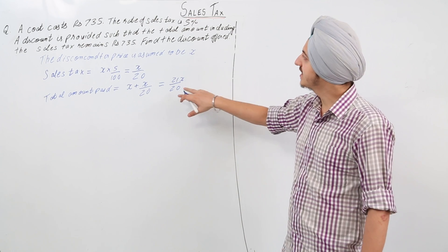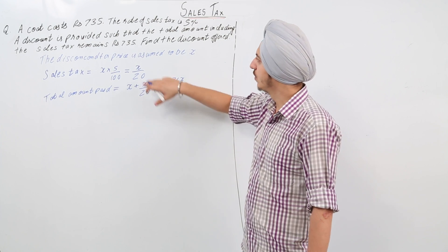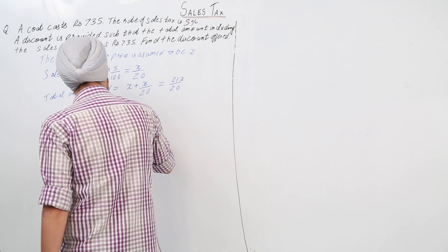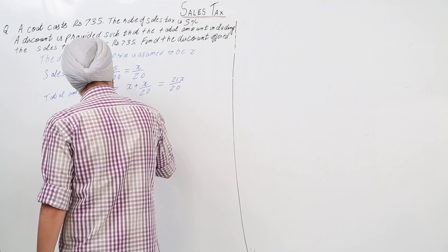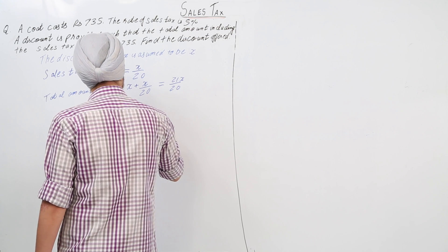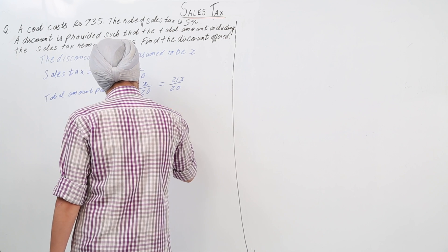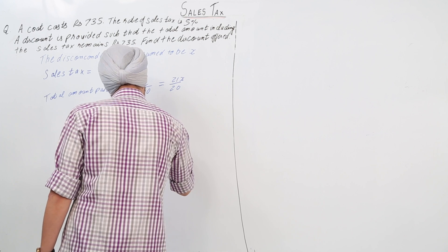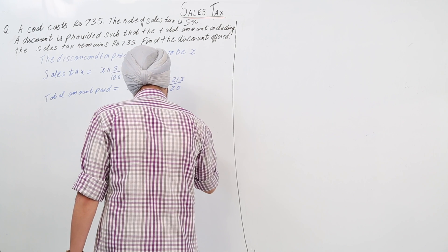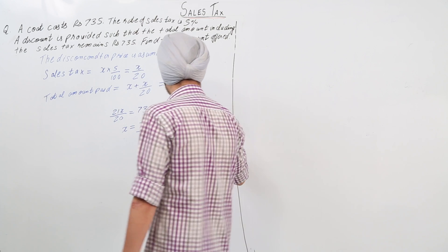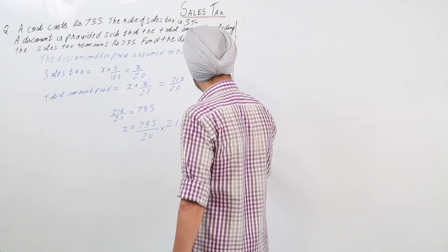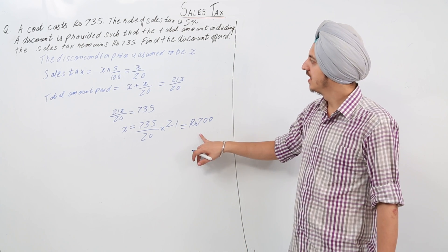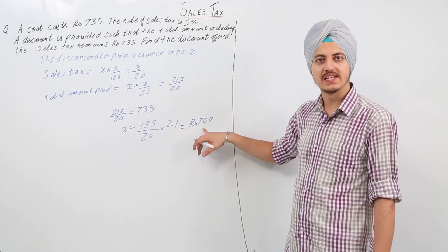This total amount paid is given as rupees 735. So according to the question, 21x upon 20 is equal to 735. From here we calculate the value of x, which comes out to be equal to rupees 700.